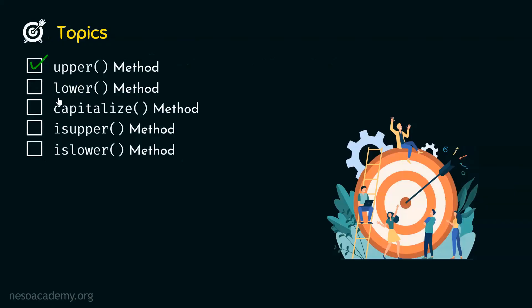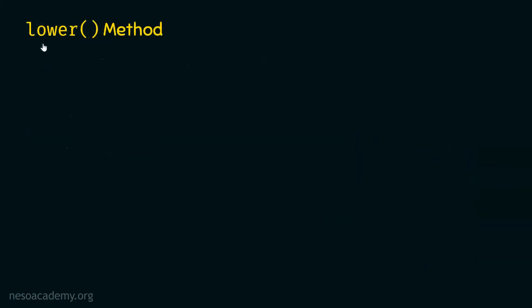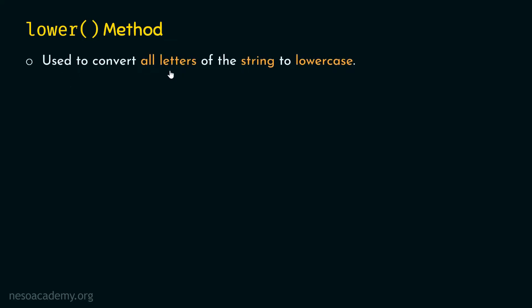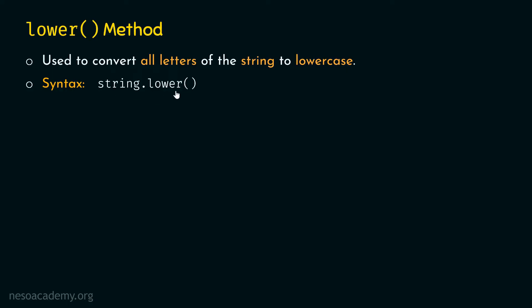Now let's see how the lower method works. Lower method is used to convert all letters of the string to lowercase — it does the opposite of what upper method does. The syntax is: string.lower() — string, then dot operator, then lower with parentheses.